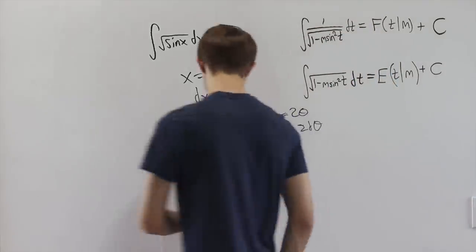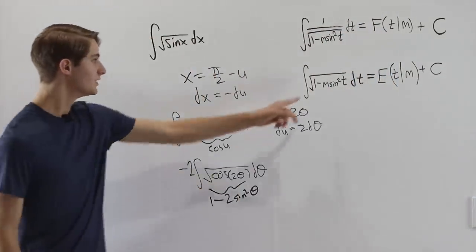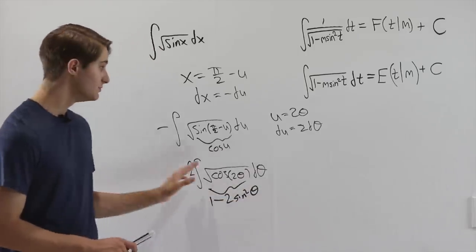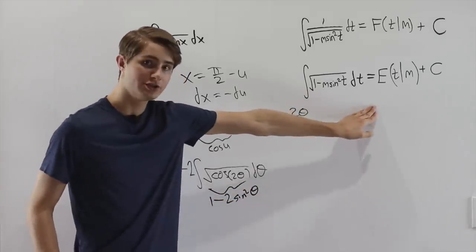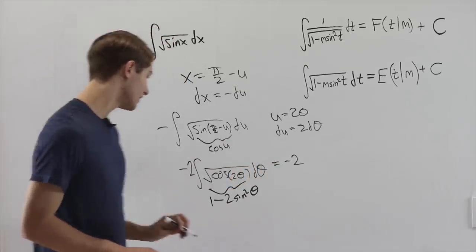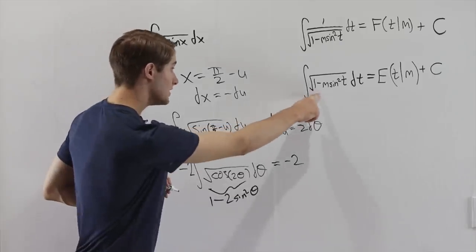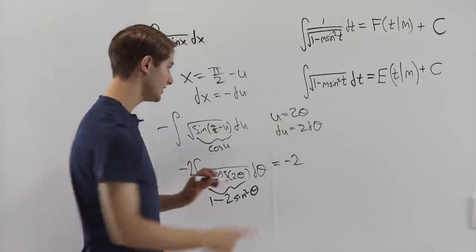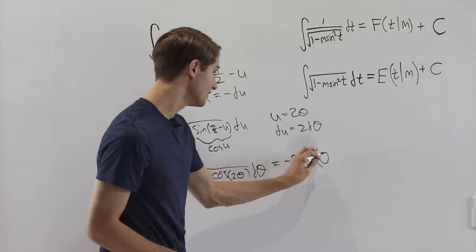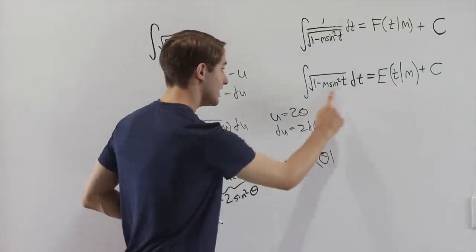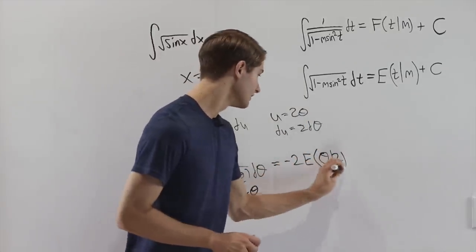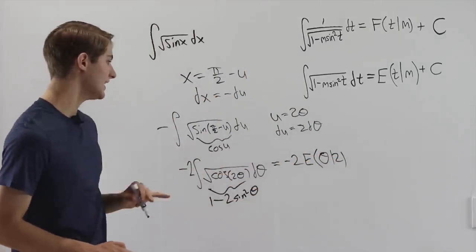And now we have finally turned our integral into exactly what we want, the square root of 1 minus m sine squared theta d theta, which means we can use this special function right here to give us our answer. We're going to have the negative 2 out front, and then the integral of the square root of 1 minus 2 sine squared theta is going to be E of, and then our input variable is theta, and instead of m, we have a 2 right here. So theta and 2,